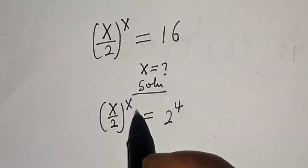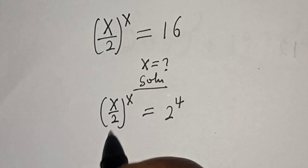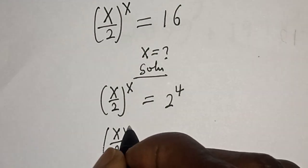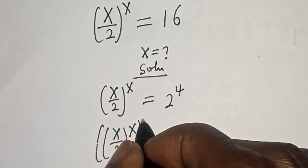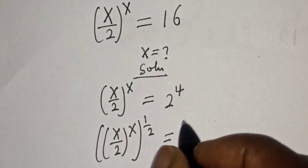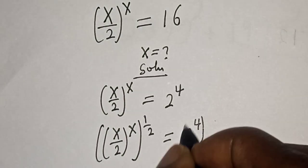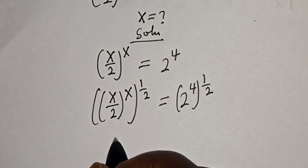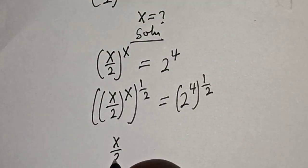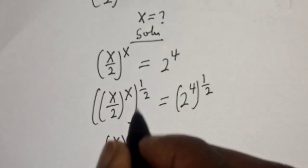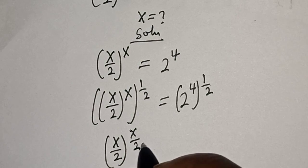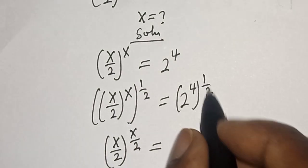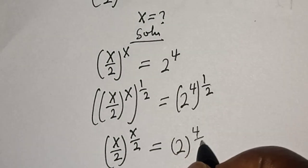Now let's multiply the exponent of both sides by 1 over 2. So s divided by 2 to the power of s, raised to the power of 1 over 2, is equal to 2 to the power of 4, raised to the power of 1 over 2. Here we have s over 2 to the power of s times 1 over 2, which gives us s over 2 to the power of s over 2, equal to 2 to the power of 4 over 2.